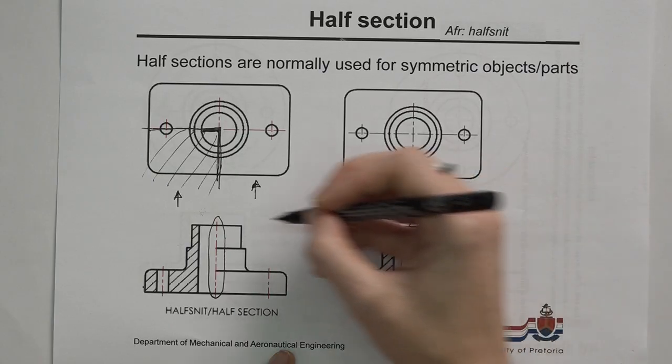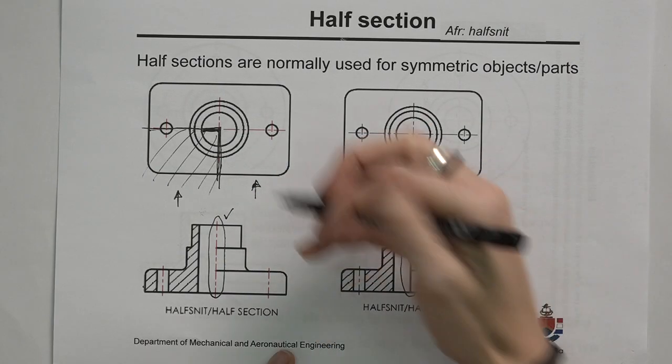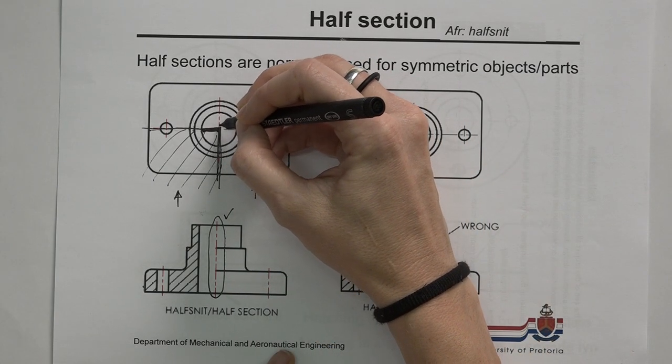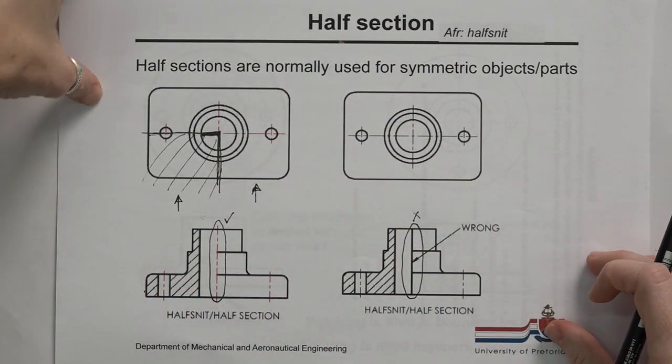So this will be incorrect, and this will be the correct way. Because behind the point here, there's no material. That's why we use a center line.